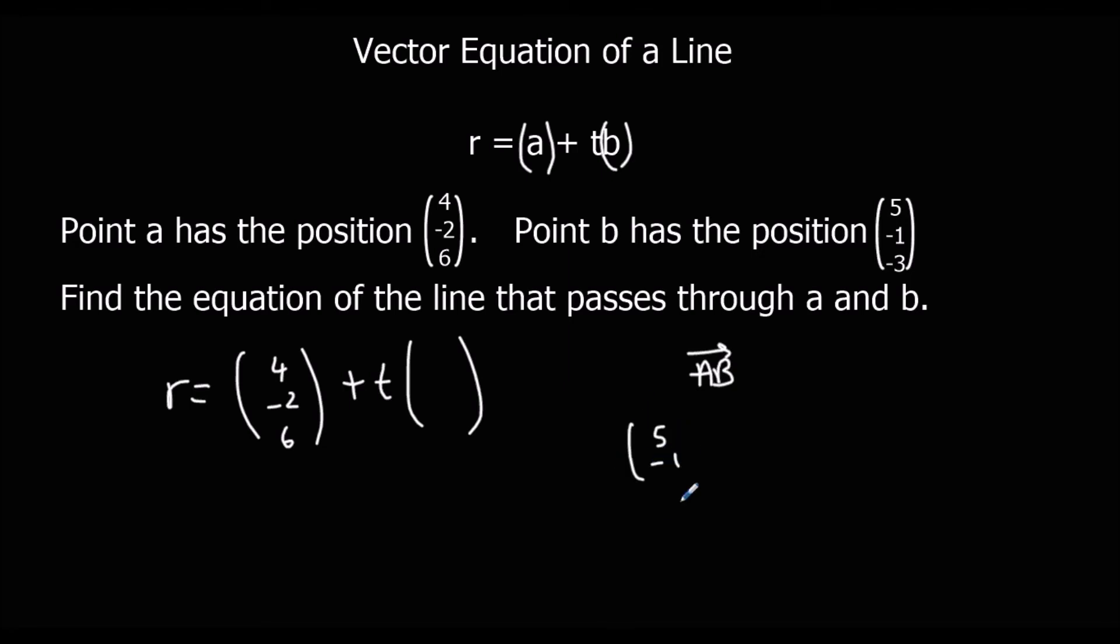(5, -1, -3) take away (4, -2, 6). So 5 minus 4 is 1, negative 1 take away negative 2 is 1, and negative 3 take away 6 is negative 9.